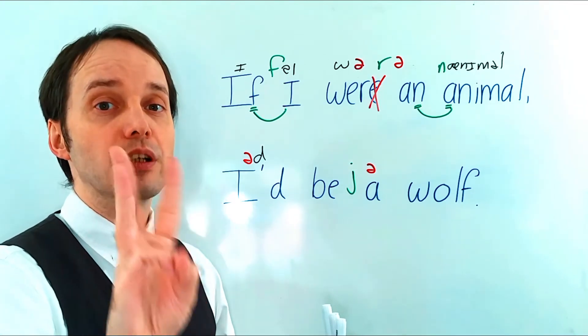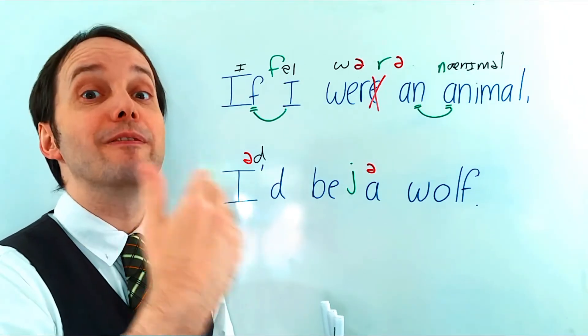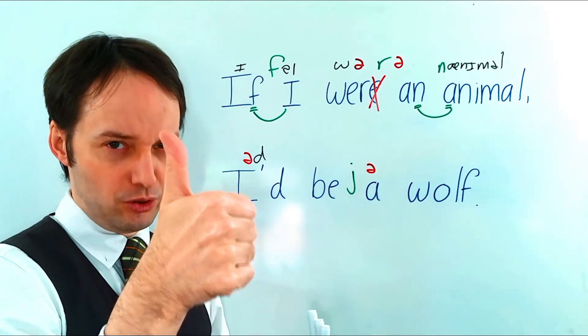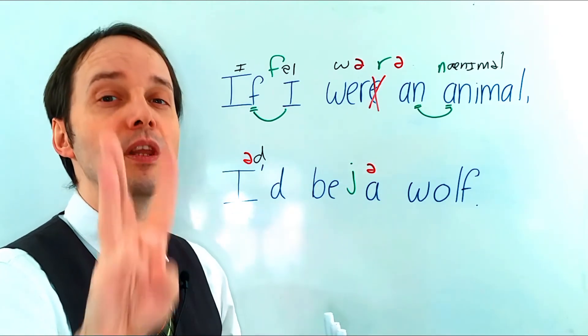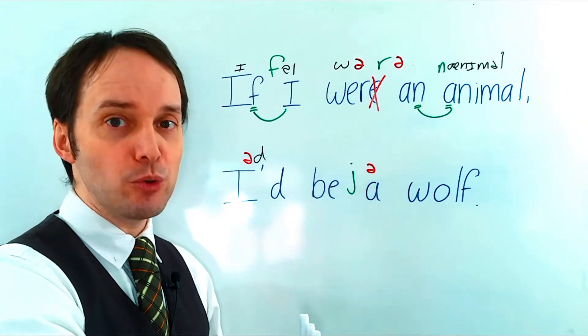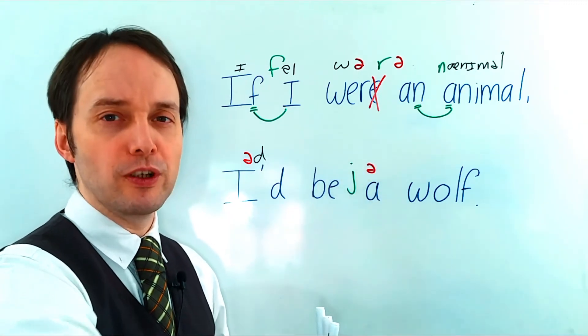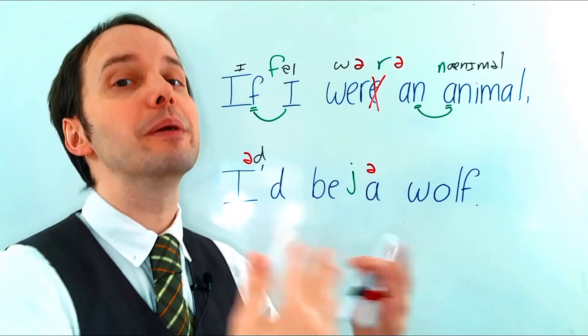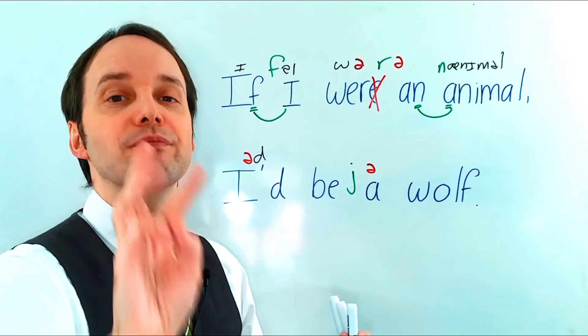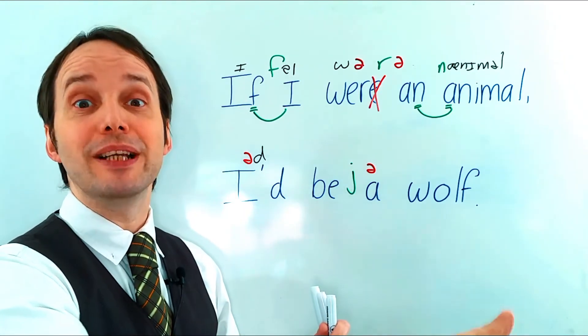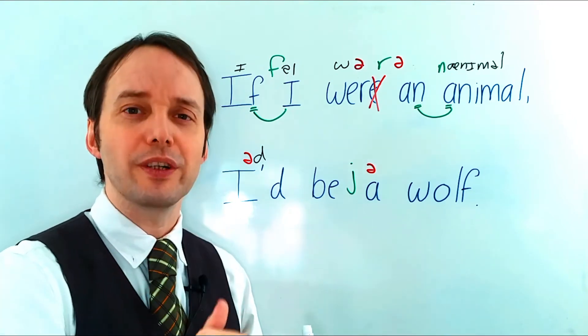Okay, repeat after me. Three. If I were an animal, I'd be a wolf. Cool. Very good. One more. Two. If I were an animal, I'd be a wolf. Good. One more, a little bit faster, a little bit more natural. Two. If I were an animal, I'd be a wolf. Cool. Yeah, very good.